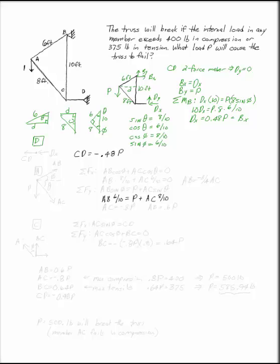I can start finding out what my individual loads are in each member. I'm going to start with the pin at D because it's extremely easy. DX is 0.48P, so CD has to be that same thing.